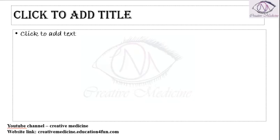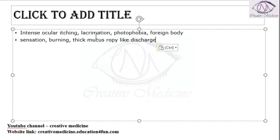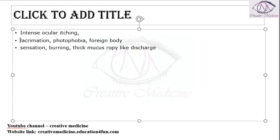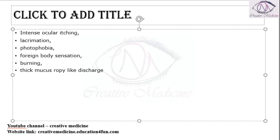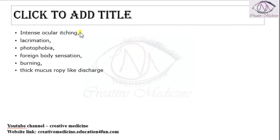The patient presents with intense ocular itching along with lacrimation, photophobia, foreign body sensation, burning, and thick ropey mucus discharge. Itching is the most important feature of vernal keratoconjunctivitis, and the thick ropey mucus discharge is also a characteristic finding.